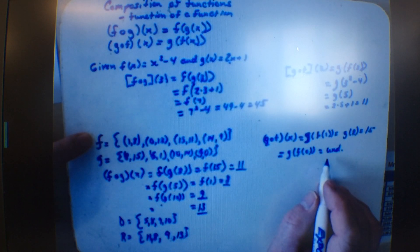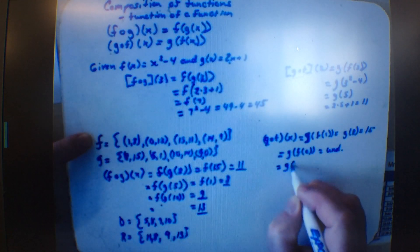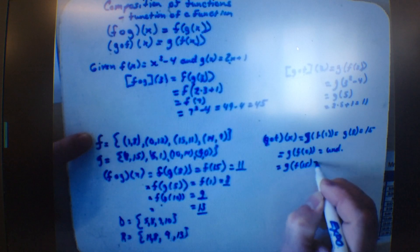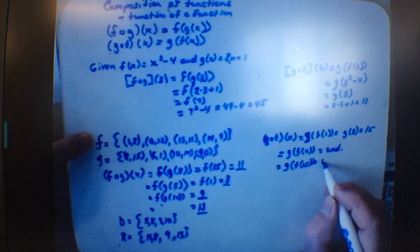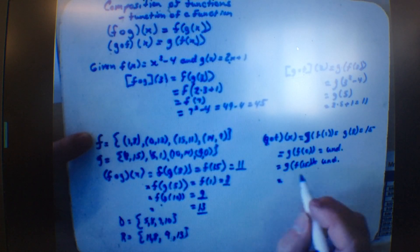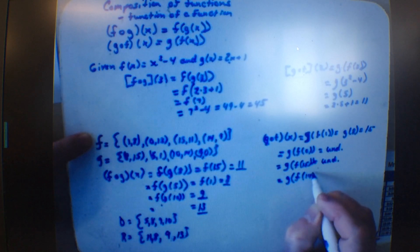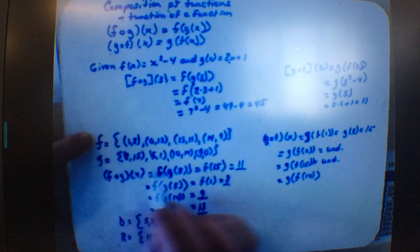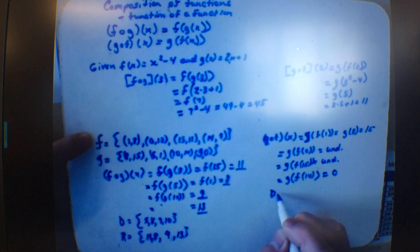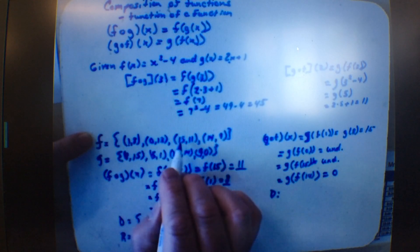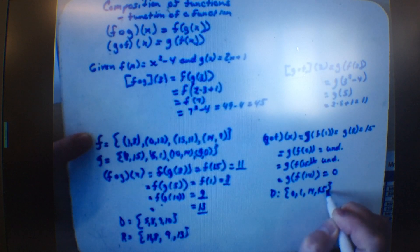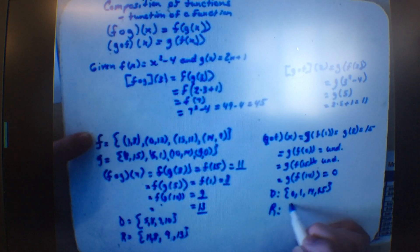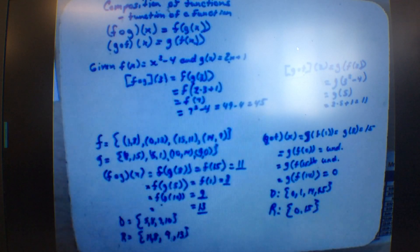The next one is g of f of 15: f of 15 is 11, we go to g and there's no 11, so it's undefined. The last one is g of f of 14: f of 14 is 9, g of 9 is 0. So the domain is 0, 1, 14, and 15. The range is 0 and 15 — two of them are undefined.